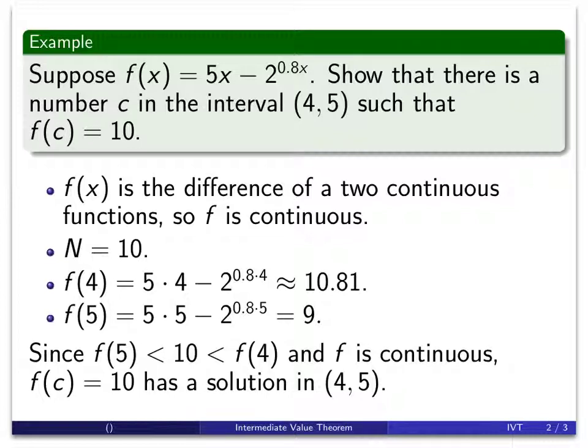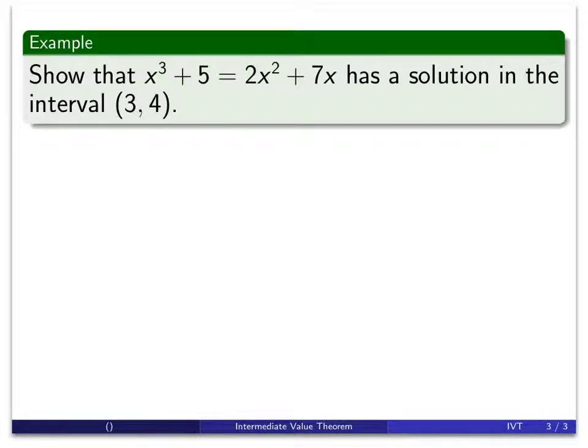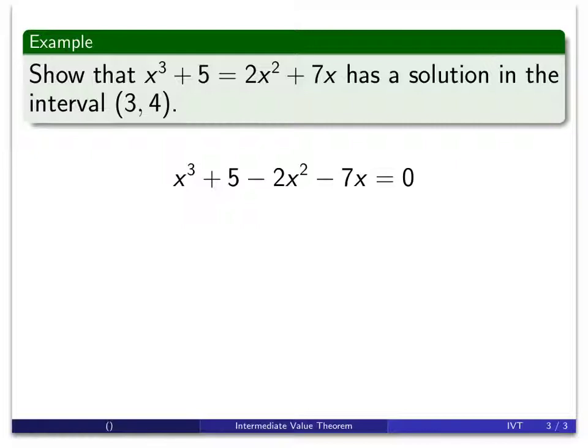Now let's look at one where we have to sort of put it into the proper form. We have an equation this time, x³ + 5 = 2x² + 7x. We want to show that that equation has a solution somewhere in the interval between 3 and 4. So we kind of see the interval stuff, but I don't see a function and I don't see a numerical value. So what we do in this circumstance is we solve our function equal to a number, and I think the easiest thing is just to bring all of the terms to one side of the equation, which we've done here. And then you'll always be equal to 0.